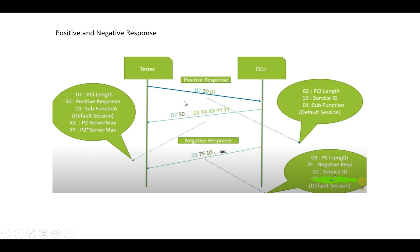Let's look at positive and negative responses pictorially. Say the tester sends request 0x02, 0x10, 0x01 — that is Diagnostic Session Control requesting the default session. The ECU responds with PCI length 0x07, then 0x50 (which is 0x10 + 0x40 per UDS standard), followed by 0x01 — the sub-function ID for default session — followed by P2 (xxx, first two bytes) indicating the minimum server timeout, and P2* (yyy, next two bytes) indicating the maximum server timeout.